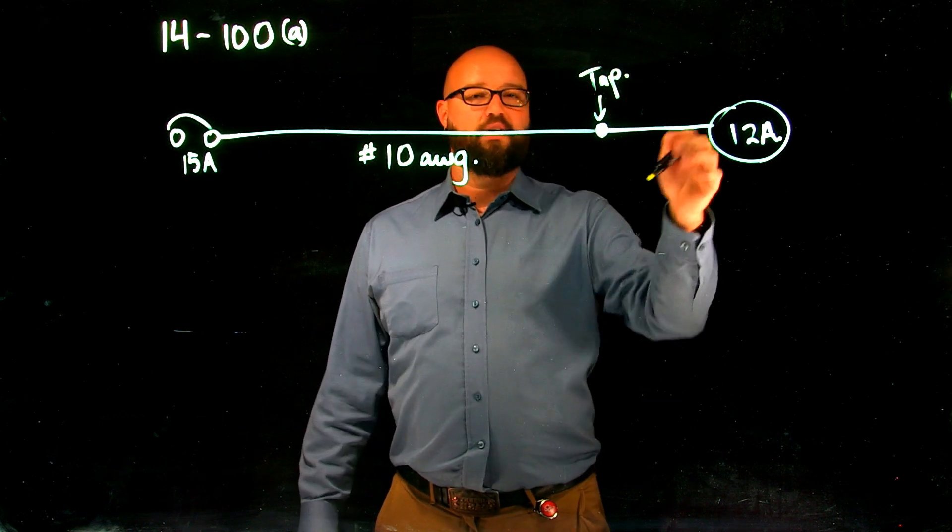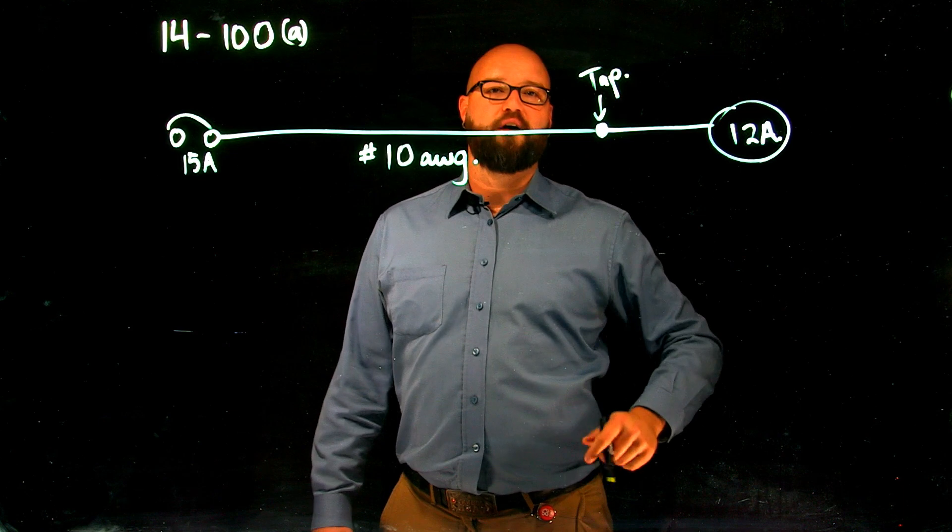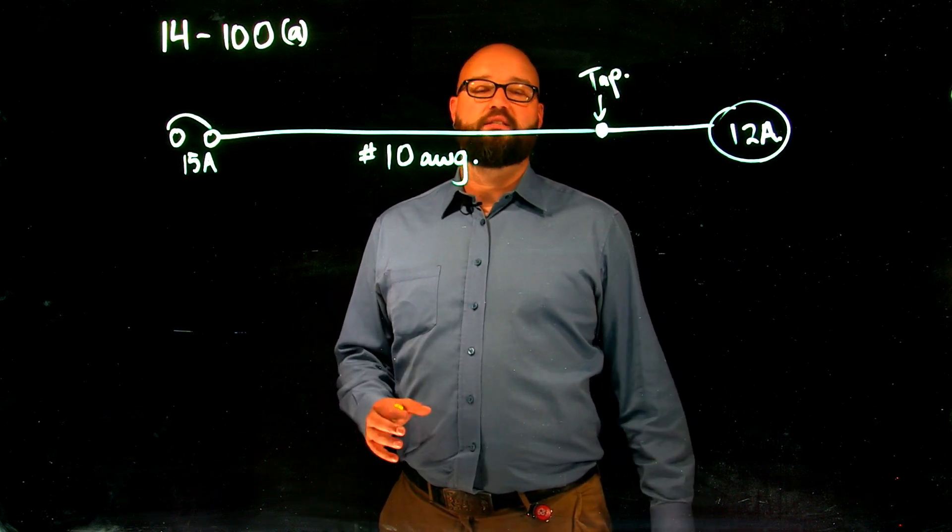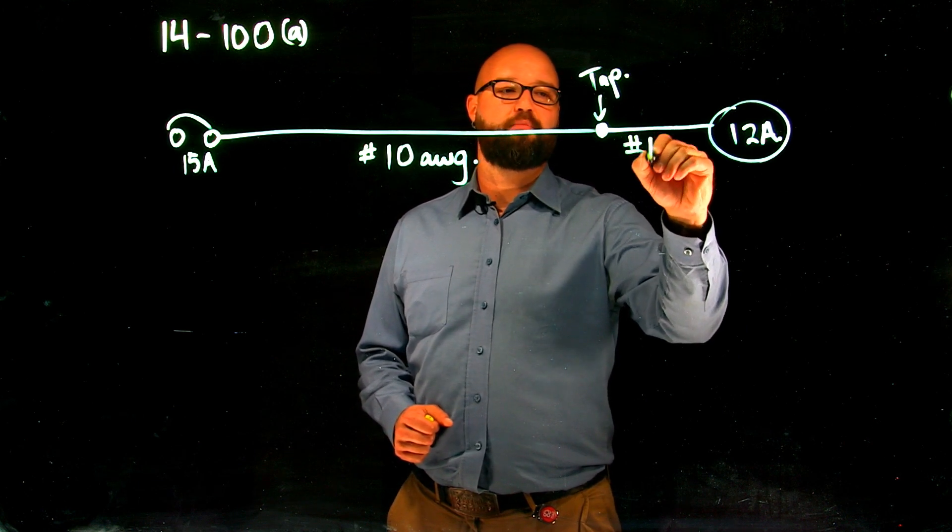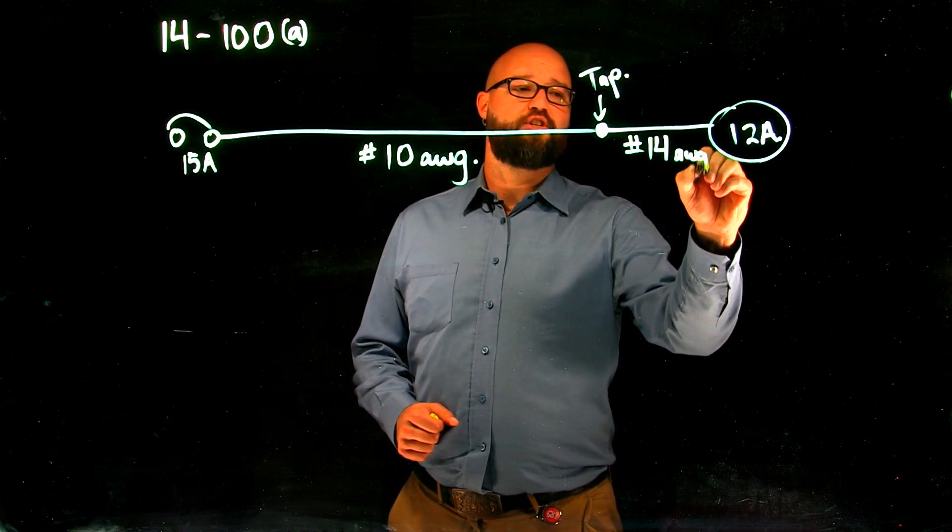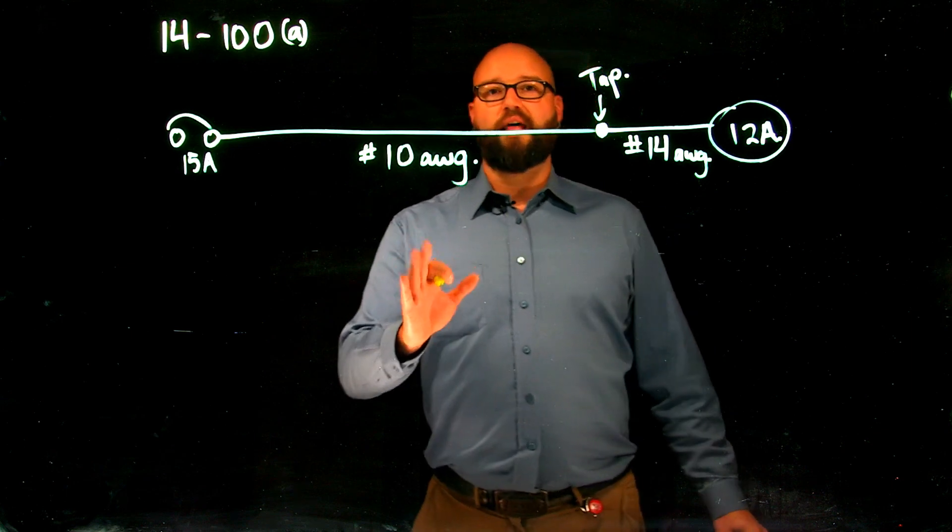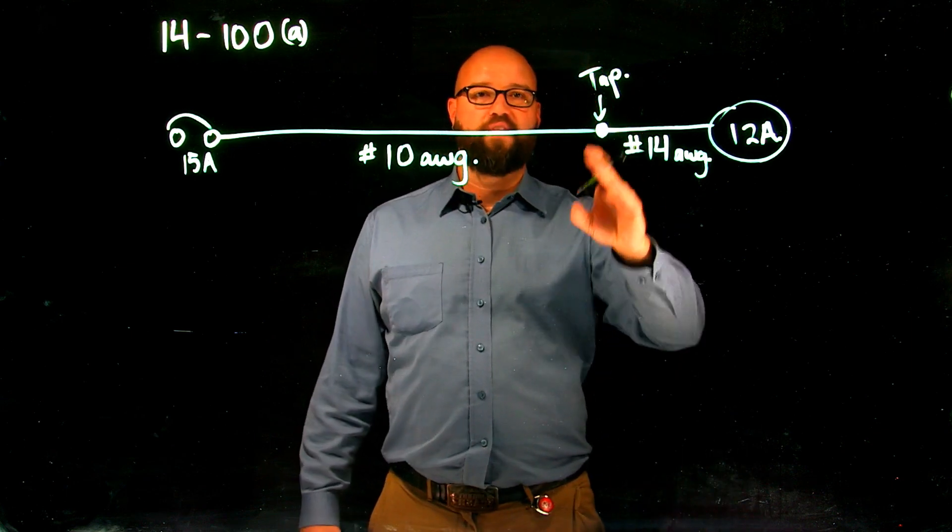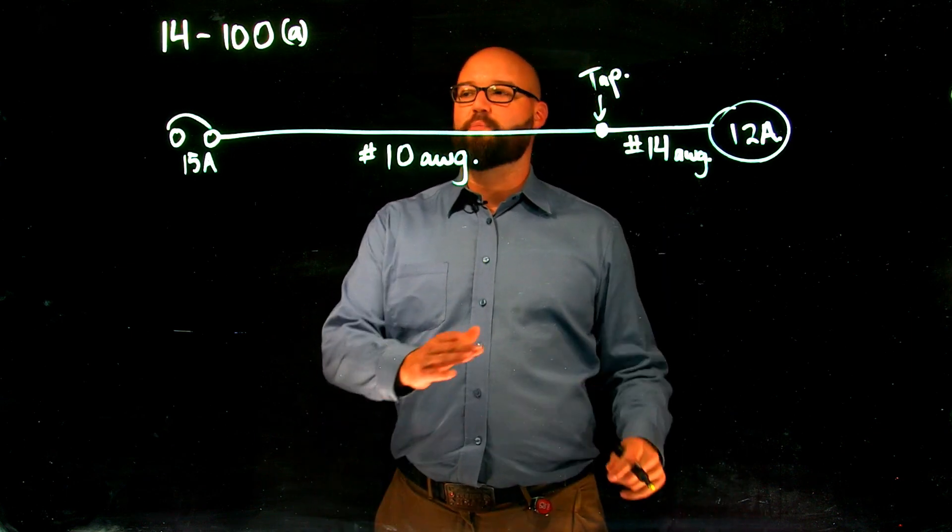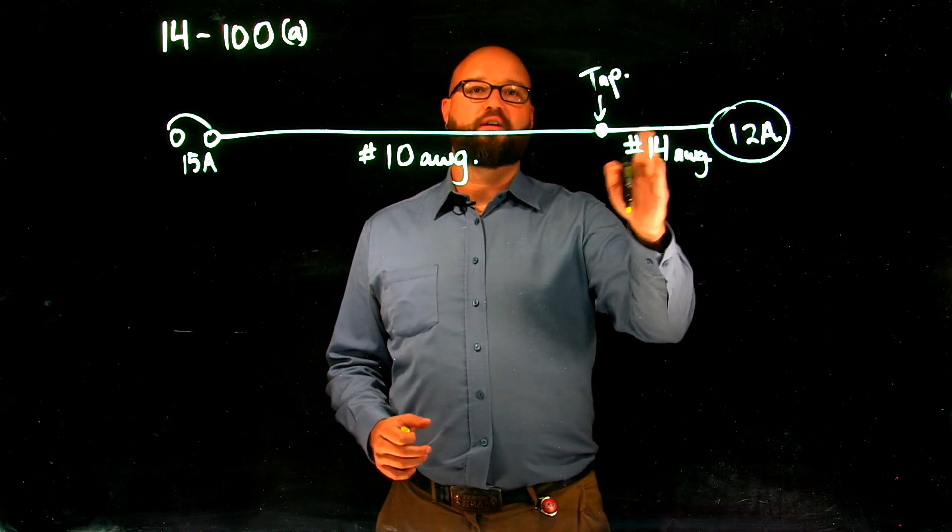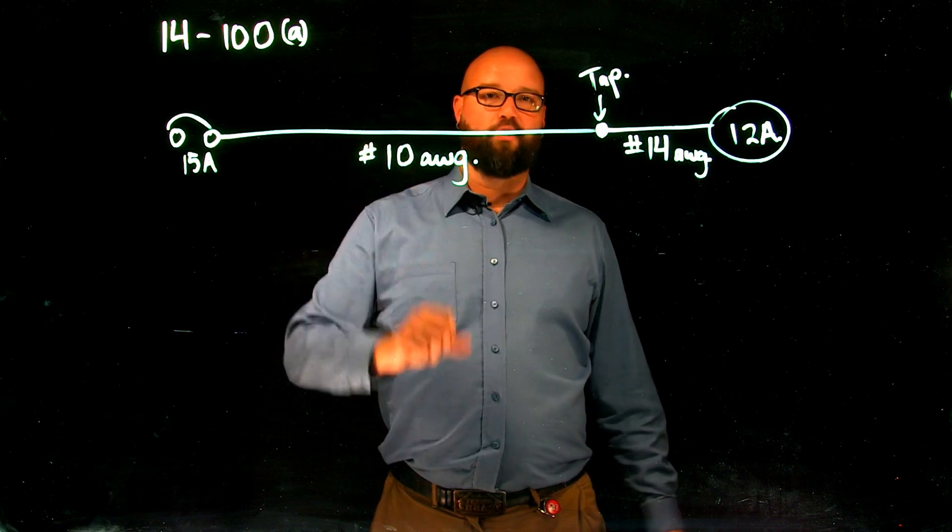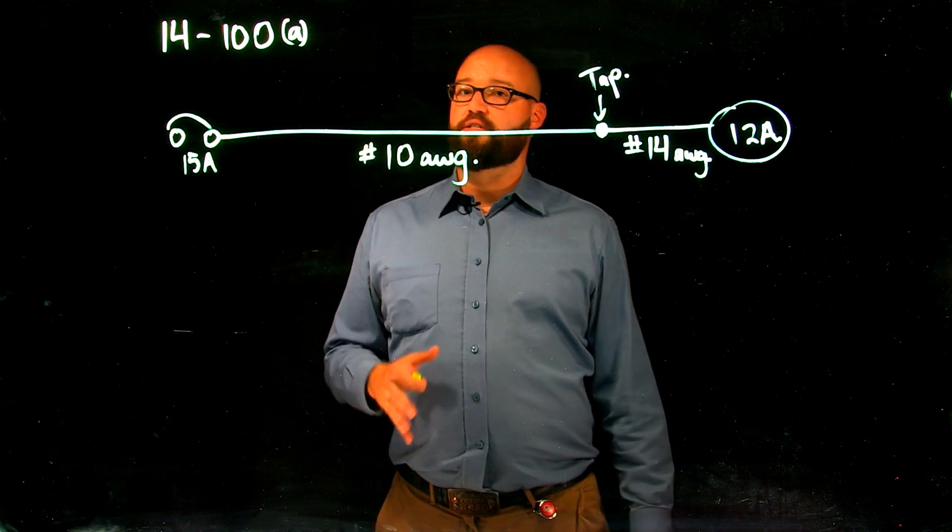This downstream is now our tap conductor. According to code, we are allowed to downsize this conductor without overcurrent protection at this point. If we went down to, say, a number 14 gauge conductor, this is allowable without the overcurrent device on that decrease in conductor size because I am sufficiently protecting my smaller conductor with the overcurrent on my larger conductor.